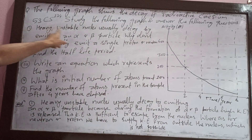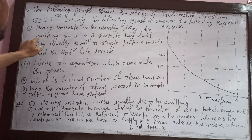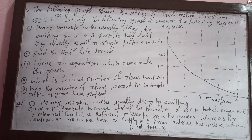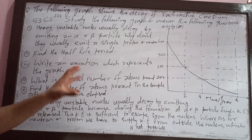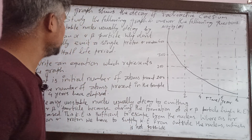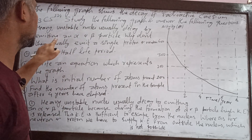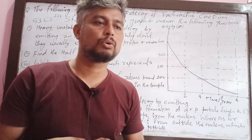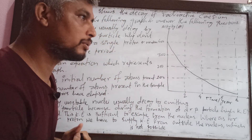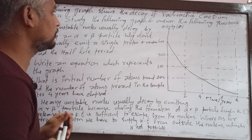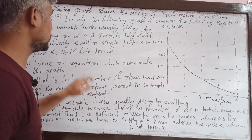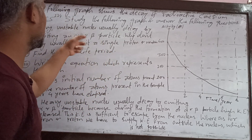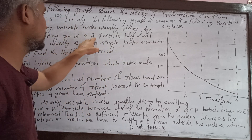First question: unstable nuclei usually decay by emitting an alpha or beta particle. Why don't they usually emit a single proton or neutron? Why don't unstable nuclei emit an alpha or beta particle, or why don't they emit a proton or neutron?